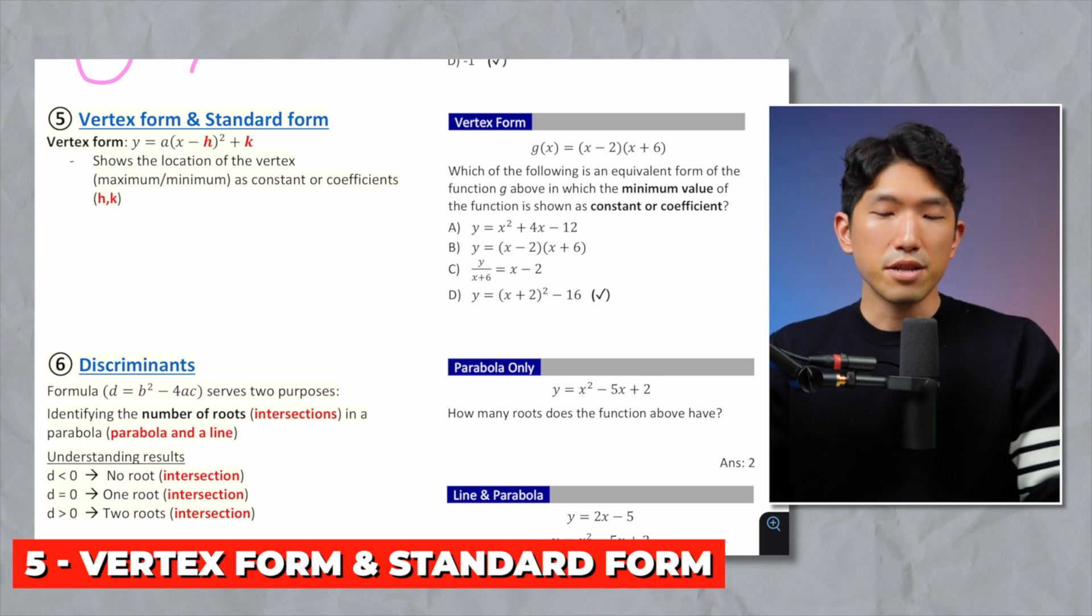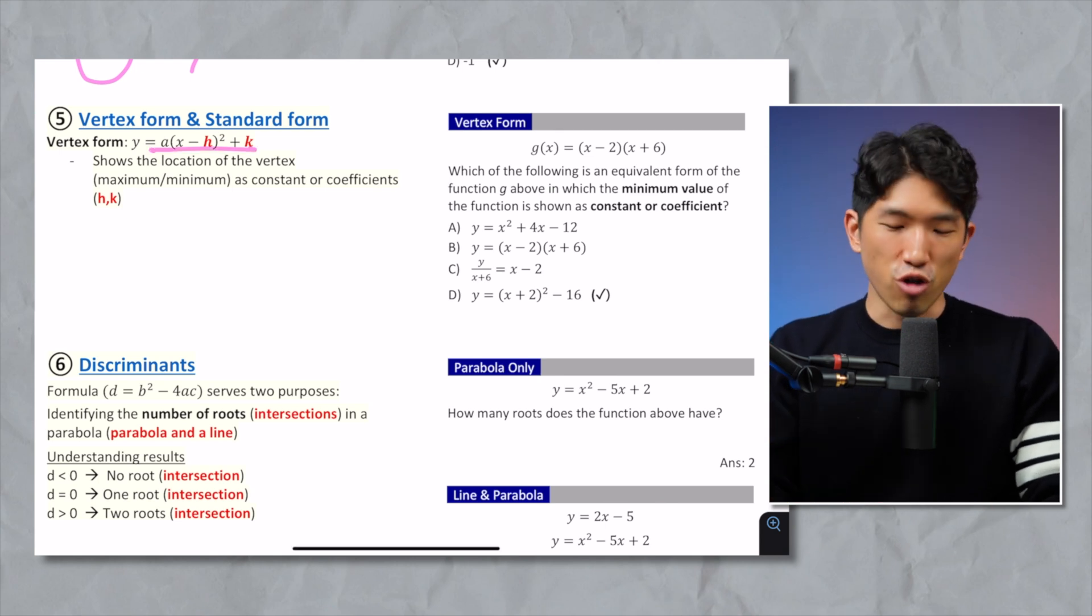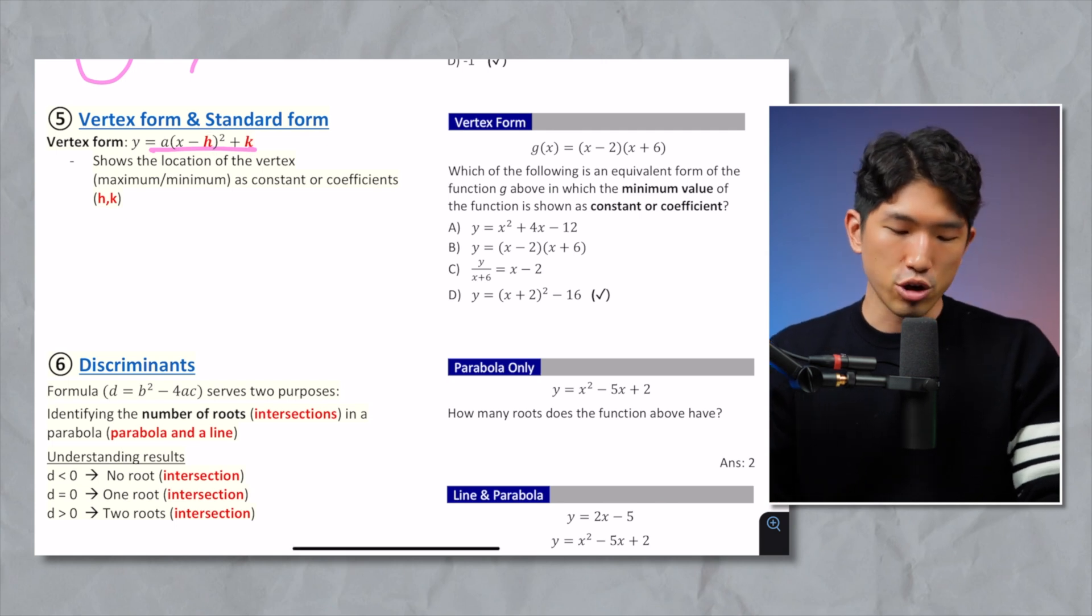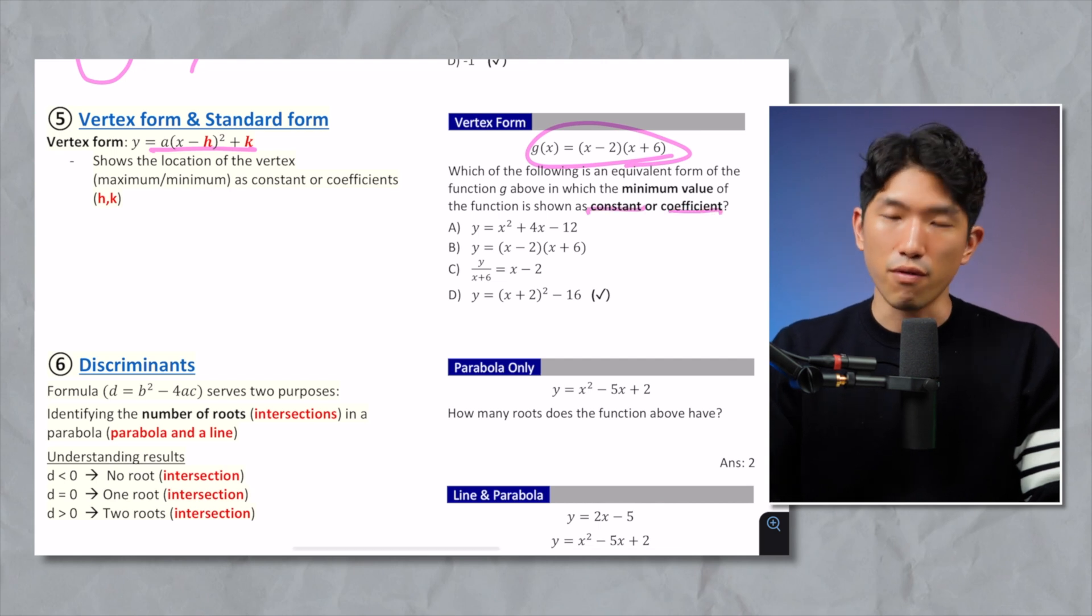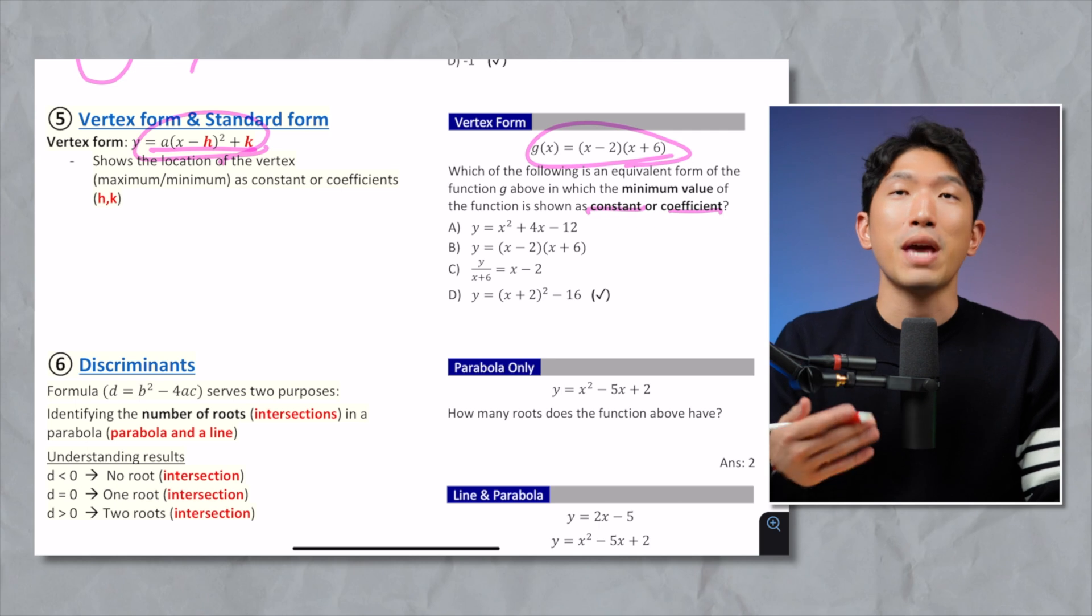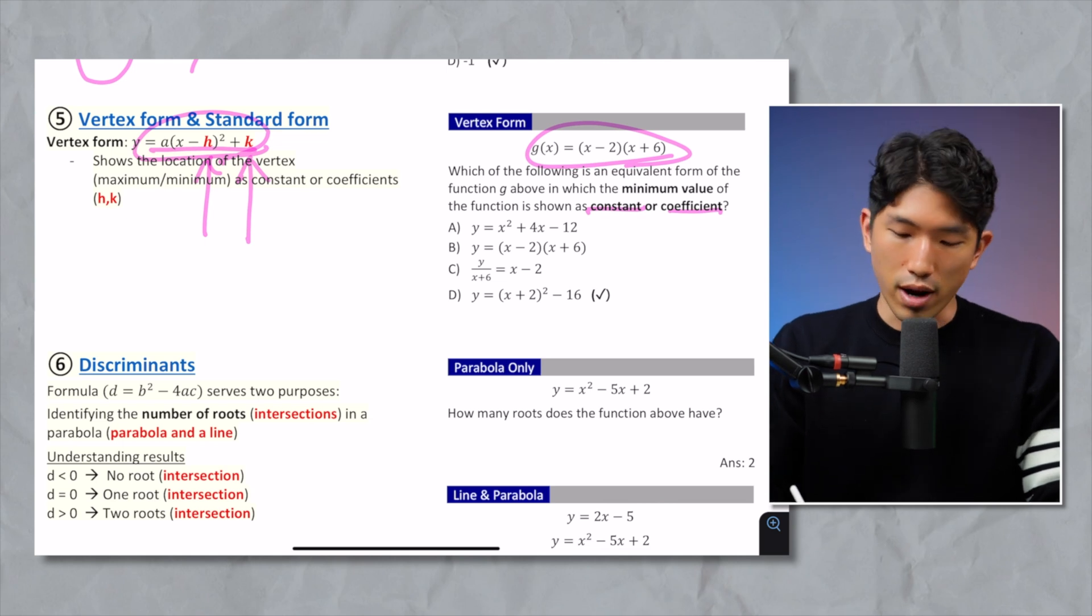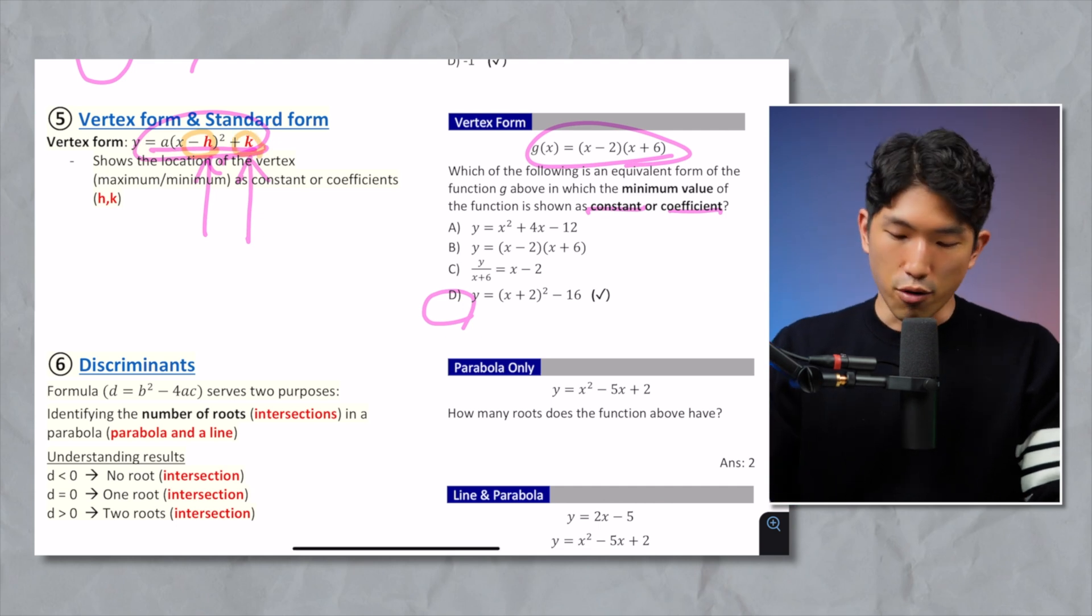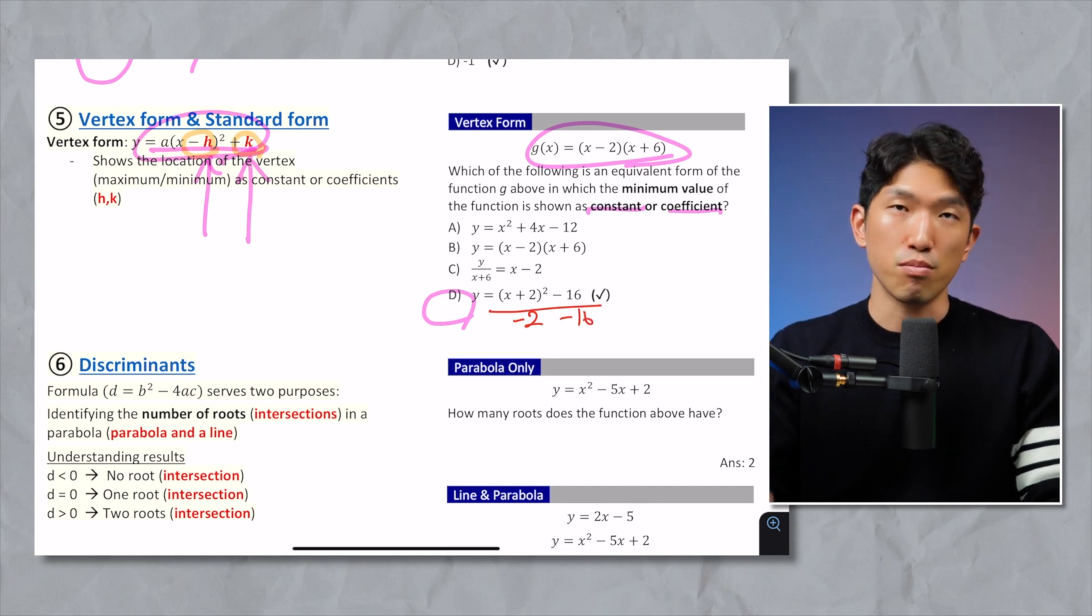Now, let's go to the vertex form and standard form. So the SAT is going to ask you to put a quadratic function into a vertex form or standard form. You want to be familiar with the vertex form structure, which is a parentheses x minus h squared plus k. And h and k represents the location of the vertex. And on the SAT, it's going to give you a quadratic function and it's going to ask you to represent the minimum maximum vertex of the parabola as constant or coefficient. And we know that the vertex form shows you the location of the vertex as constants because by looking at h and k, you know exactly where the vertex is. So our answer is going to be choice d. Don't get confused on the structure. Make sure you do negative h and positive k. For this example right here, your h is going to be minus 2 and your k is going to be negative 16. That way, it turns out like that when you plug it into the vertex form.